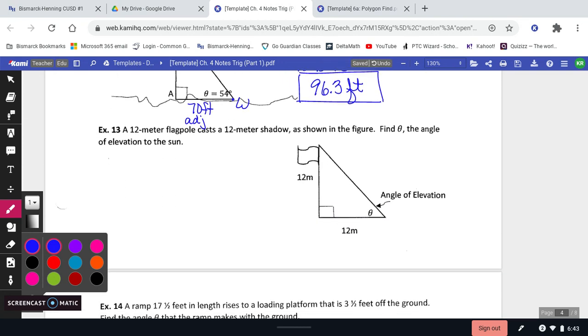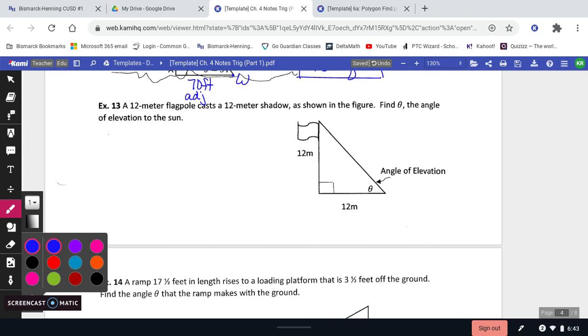This next one: a 12 meter flagpole casts a 12 meter shadow. Find theta, the angle of elevation to the sun. If you sit back and look at this triangle for a second, it's isosceles. If this is an isosceles right triangle, then you have a 45 degree angle here. So your angle of elevation is 45 degrees. Let's change one of the measurements just so we can set this up and use one of our trig functions.